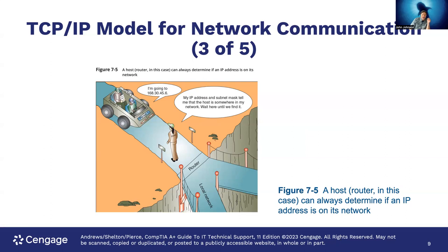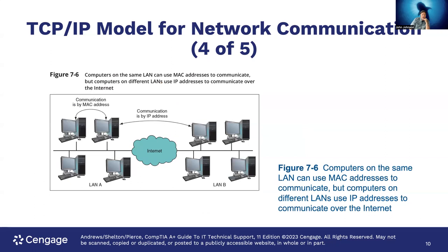In this simplified graphic, a host sends a request and the router checks whether the IP address and subnet match — whether the destination is on the local network or needs to be pushed out further. Computers on the same LAN can use MAC addresses to communicate, but computers on different LANs use IP addresses to communicate over the internet. Your switch knows the MAC addresses of local hardware and handles local communication directly. If you need to go out to the internet, MAC addresses don't work anymore — you have to use the IP protocol to reach other systems at large.